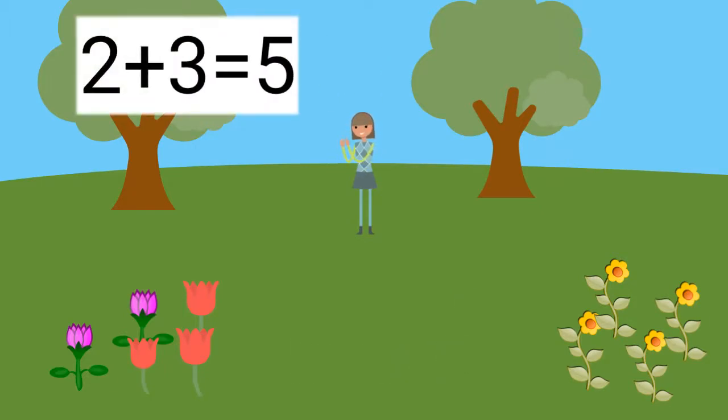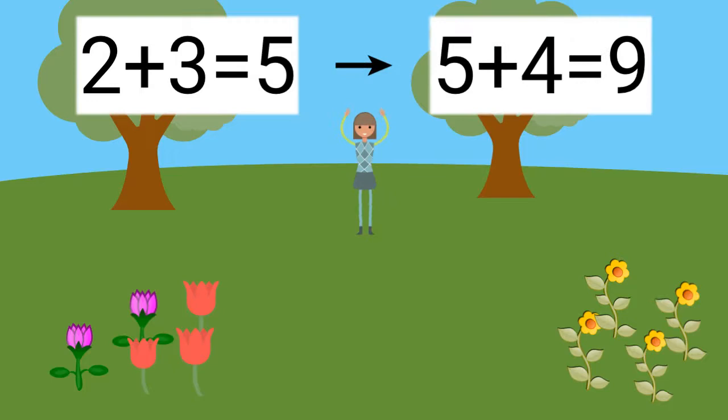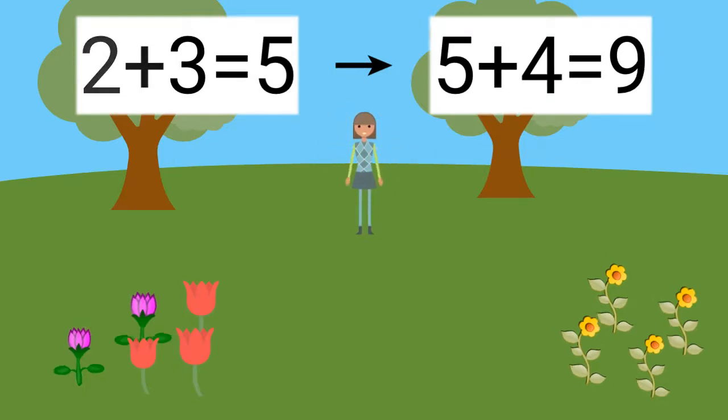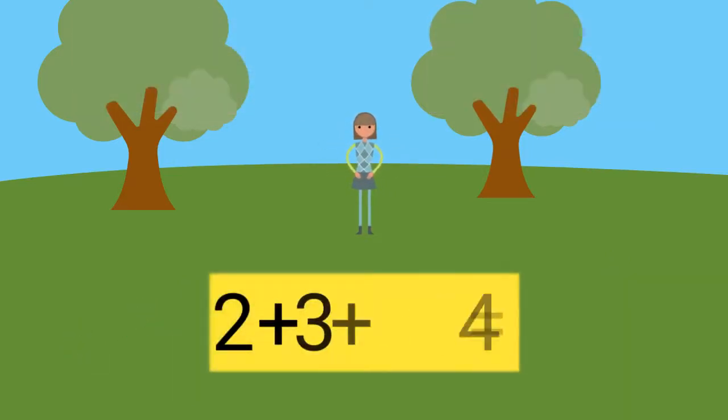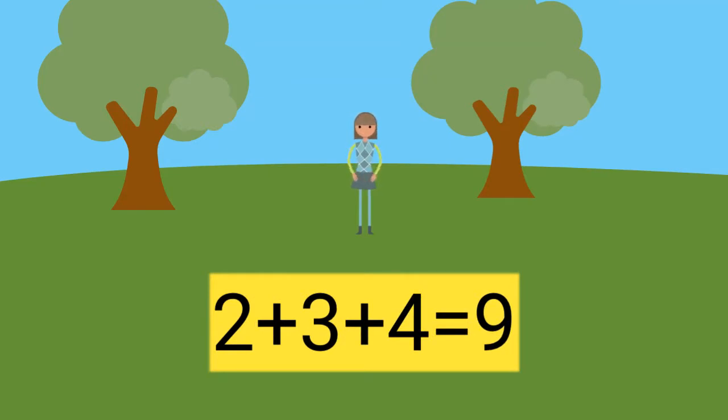First, we added two plus three to get five. Next, we added five plus four to get nine. Now you know two plus three plus four equals nine. You are a fast learner.